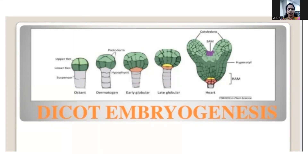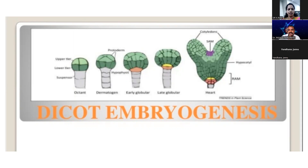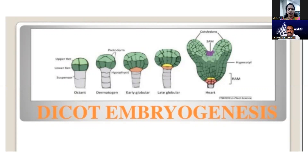Double fertilization is the characteristic of which plants? Angiosperms or gymnosperms? Also, the male gametes of angiosperms — are they non-motile, motile, or flagellate? The ripened ovary is known as: fruit, embryo, seed, or endospore? The naked seeded plants are the gymnosperms.